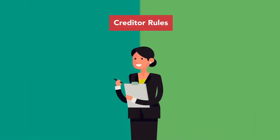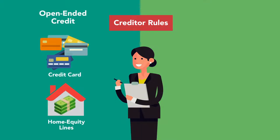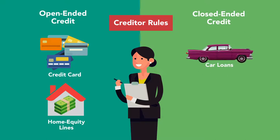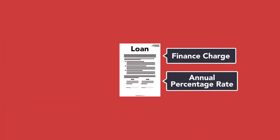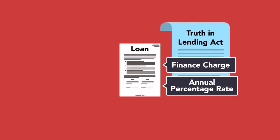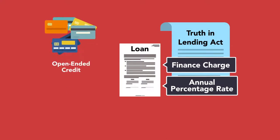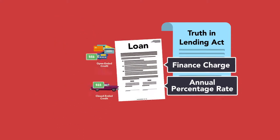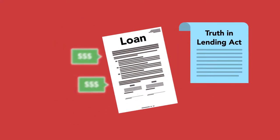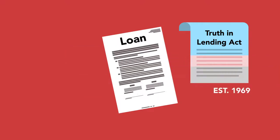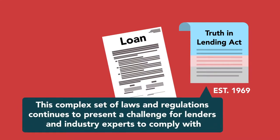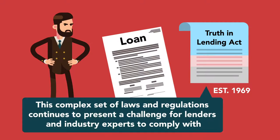The rules a creditor must follow may differ depending on whether the creditor is offering open-ended credit, such as credit cards or home equity lines, or closed-ended credit, such as car loans or mortgages. Some disclosures and rules are the same for both types of transactions. For example, the disclosures of the finance charge and the annual percentage rate are central to the purpose of the Truth in Lending Act, and such disclosures must be made for applications for both open-ended credit and closed-ended credit. Because not all charges must be disclosed to the borrower, and because the Truth in Lending Act has been amended many times since its inception in the 1960s, this complex set of laws and regulations continues to present a challenge for lenders and industry experts to comply with.